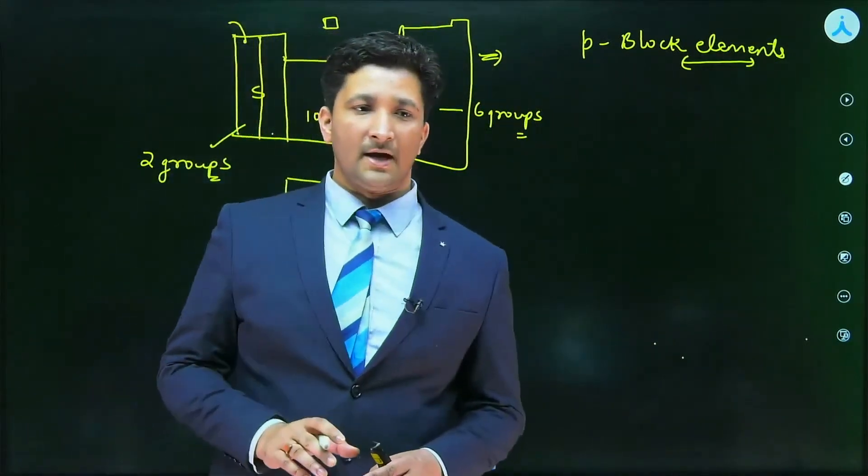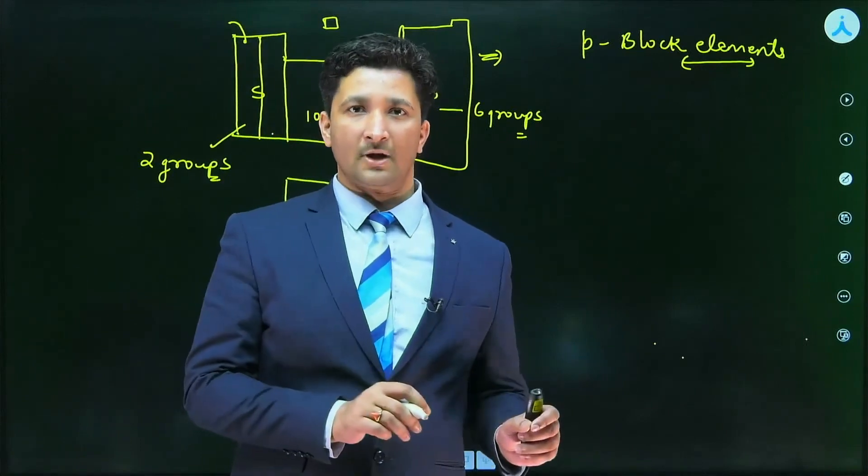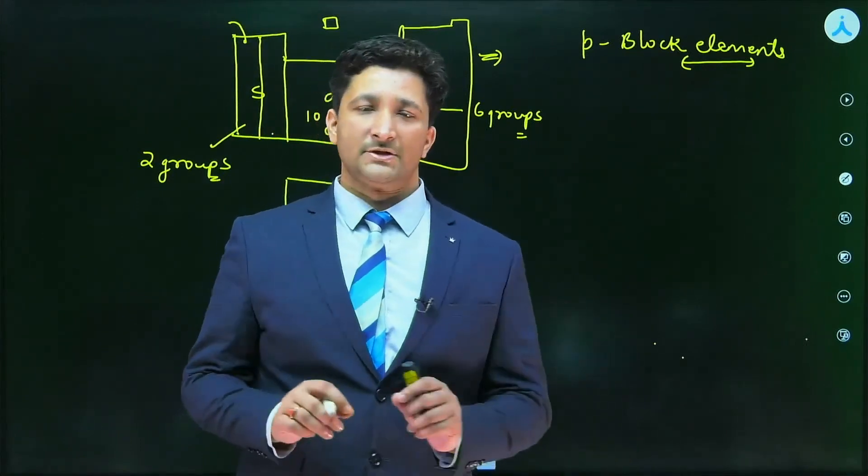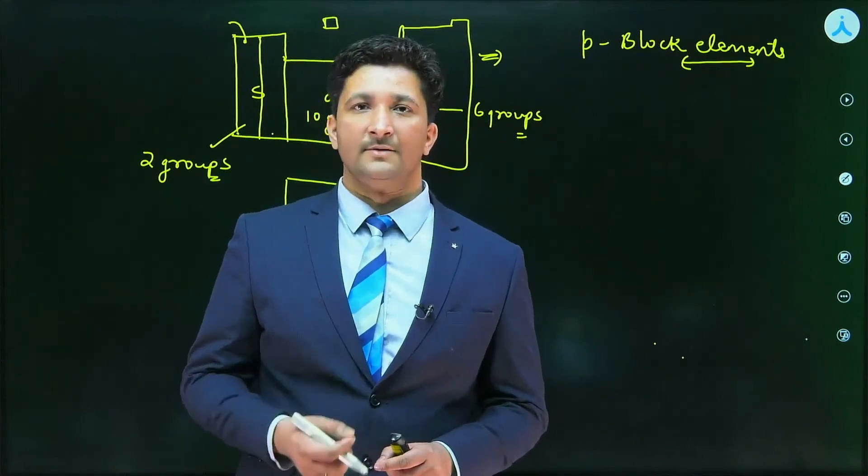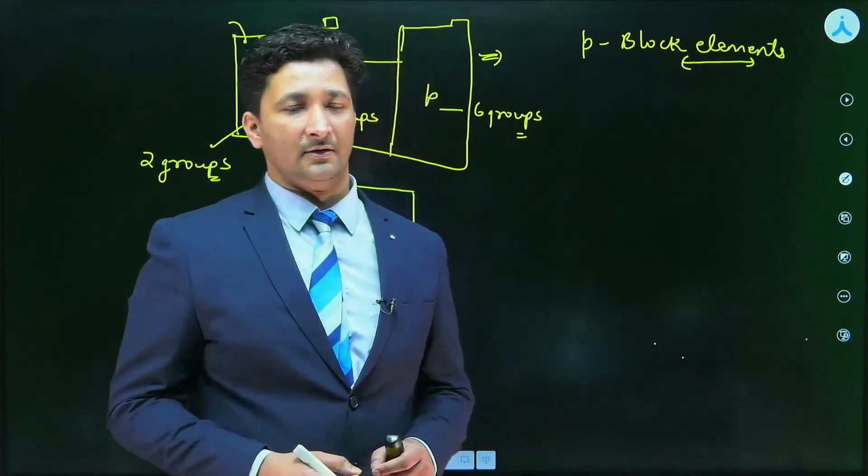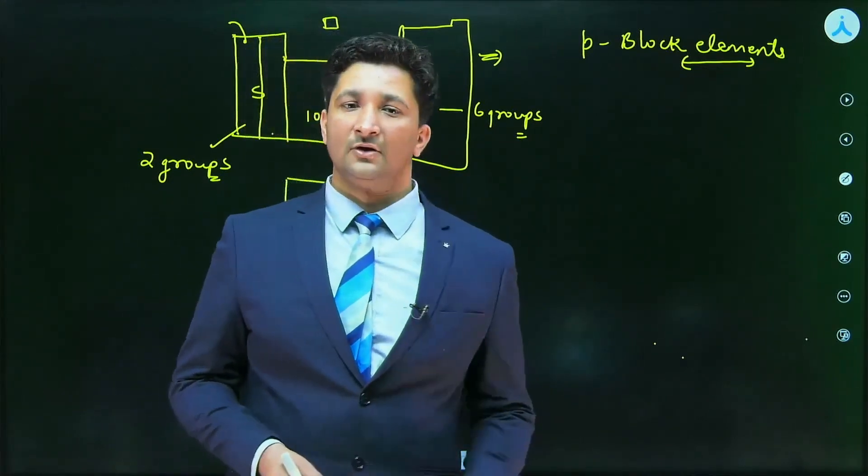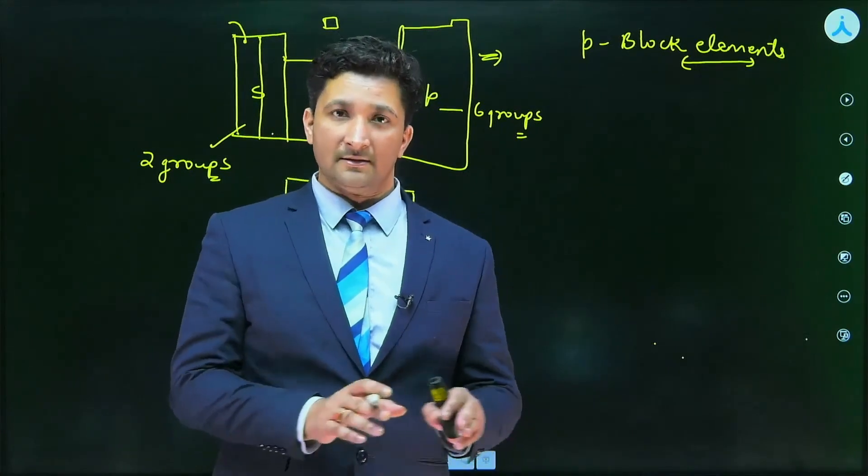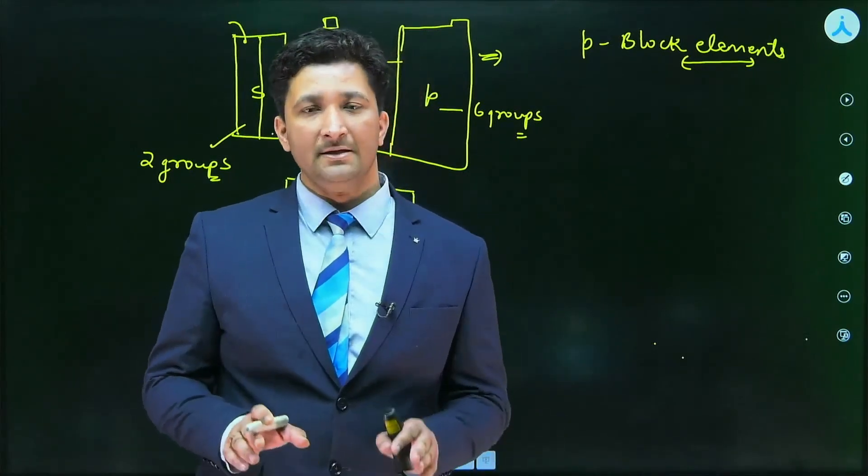First of all, in order to identify the P block elements, their groups and their periods, we have to write the electronic configuration and confirm whether the last electron is entering into the P subshell or not. If the last electron enters P subshell, then definitely the element is belonging to P block.